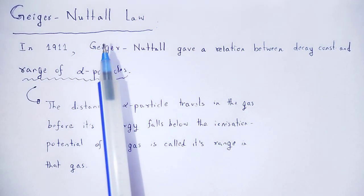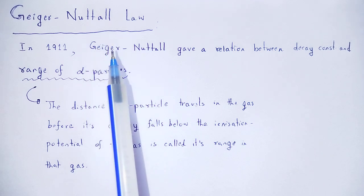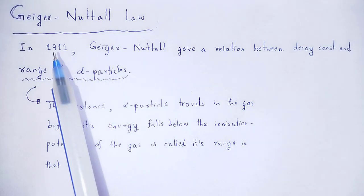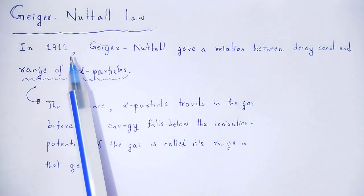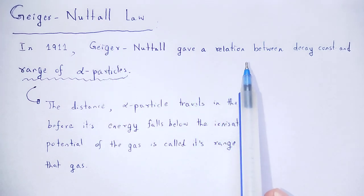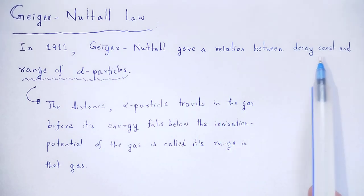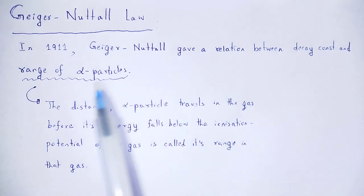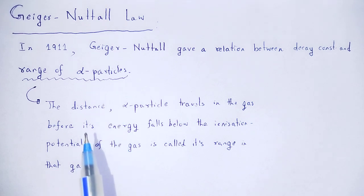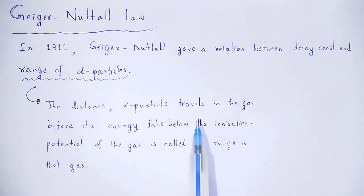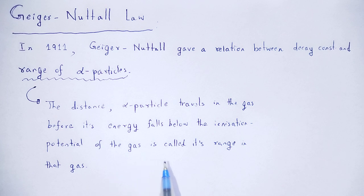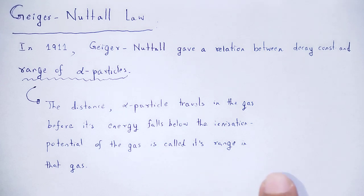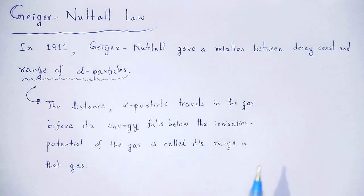Geiger and Nuttall, in the year of 1911, showed a relation between the decay constant and the range of alpha particle. The distance an alpha particle travels in the gas before its energy falls below the ionization potential of the gas is called the range in that gas.